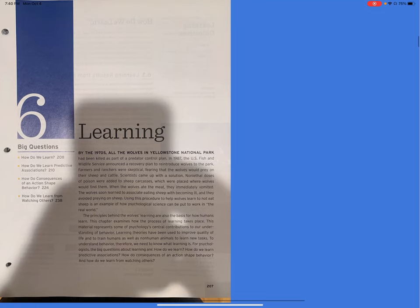By the 1970s, all the wolves in Yellowstone National Park had been killed as part of a predator control plan. In 1987, the U.S. Fish and Wildlife Service announced a recovery plan to reintroduce wolves to the park. Farmers and ranchers were skeptical, fearing that the wolves would prey on their sheep and cattle.